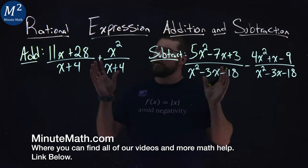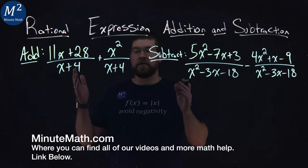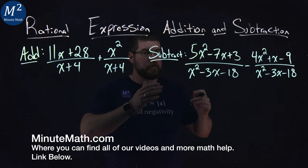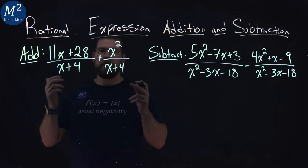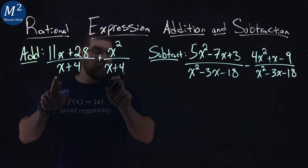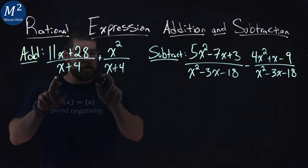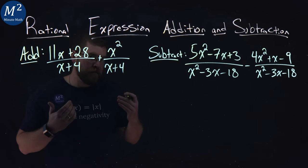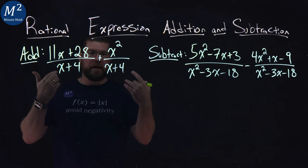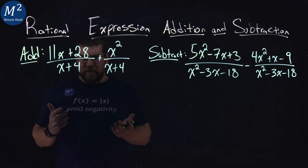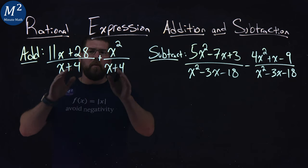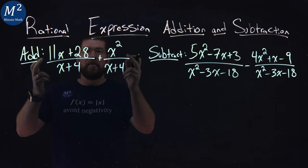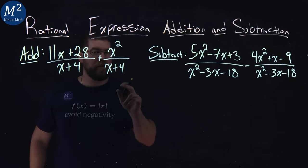We're given two problems here, two rational expressions, one we're adding and one we're subtracting. Let's start with the addition first. What do we notice about them? They both have the same exact denominator. When that happens, we can add these two rational expressions just like we add regular fractions. When we have the same denominator, we can add the numerators and keep the denominator the same.